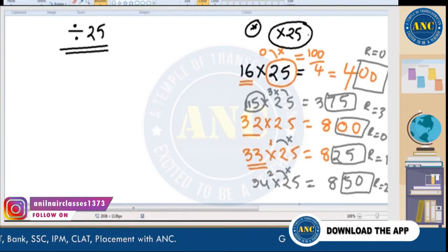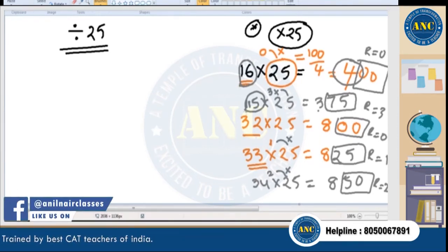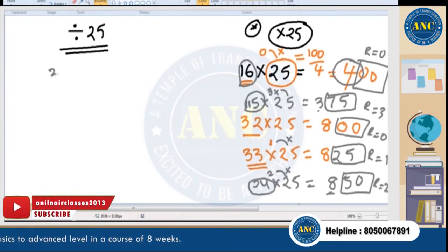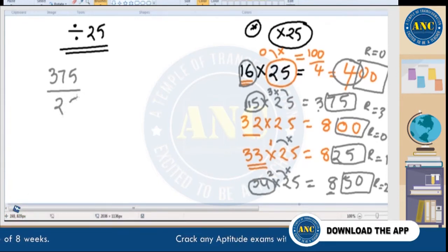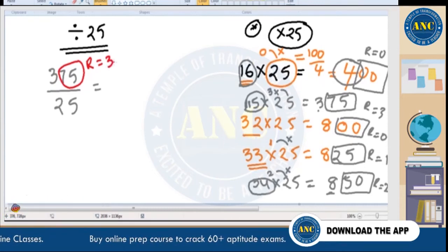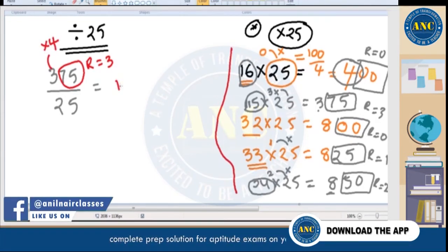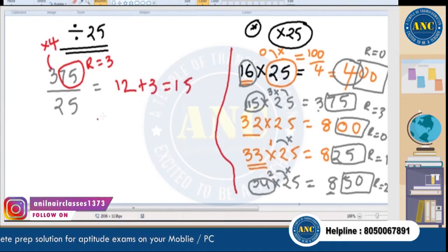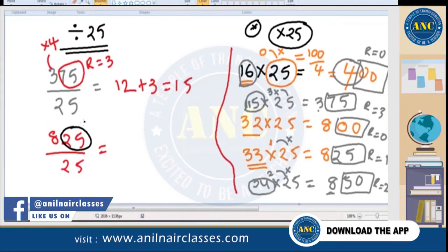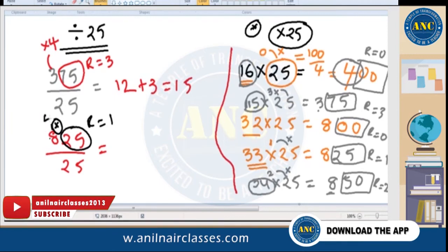Now for division by 25: the last two digits tell you the remainder. If last two digits are 75, remainder is 3. Other than the last two digits, multiply the remaining number by 4. For 375 ÷ 25: last two digits 75 means remainder 3; remaining number 3 × 4 = 12, plus 3 = 15.